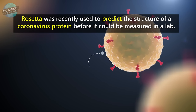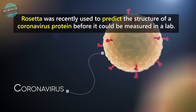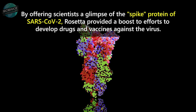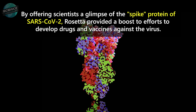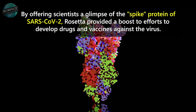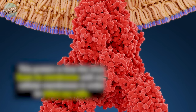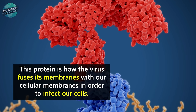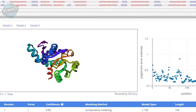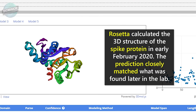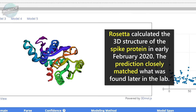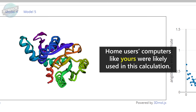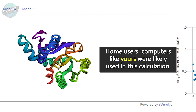Rosetta was recently used to predict the structure of a coronavirus protein before it could be measured in a lab. By offering scientists a glimpse of the spike protein of SARS-CoV-2, Rosetta provided a boost to efforts to develop drugs and vaccines against the virus. This protein is how the virus fuses its membranes with our cellular membranes in order to infect our cells. Rosetta calculated the 3D structure of this spike protein in early February 2020, and the prediction closely matched what was found later in the lab. Home users' computers, like yours, were likely used in this calculation.